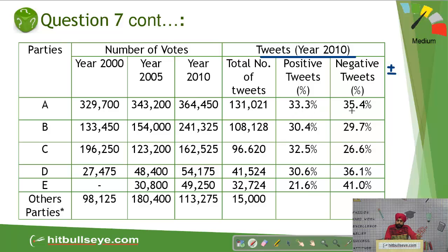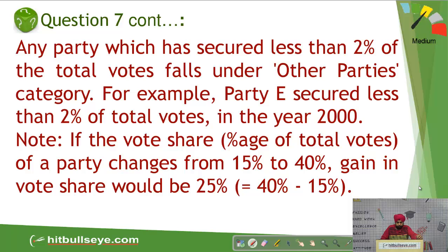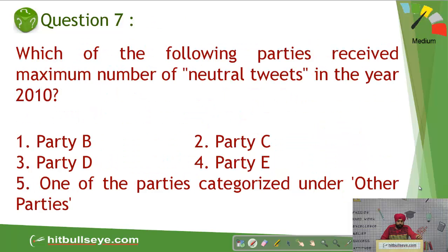So if you try and get a neutral percentage students, you can see it is 33 plus 35, this is 68.7, so roughly it is 31%. This comes out to be 60, so it is 40%. This comes out to be 59, so this is 41%. This is 66 roughly, so maybe 33%. And this is 62.5, so maybe 37.5%. Now the question is actually students, the following received the maximum number of neutral tweets.